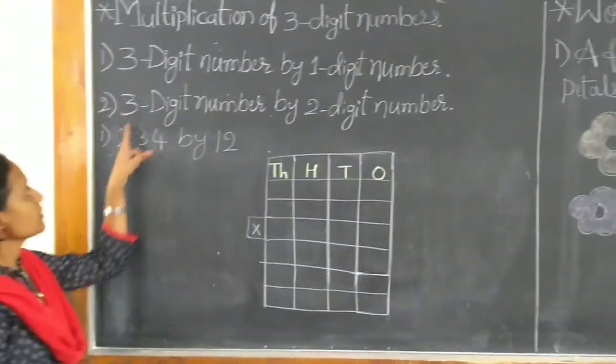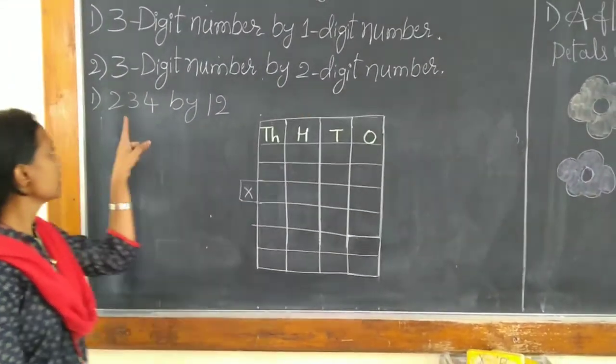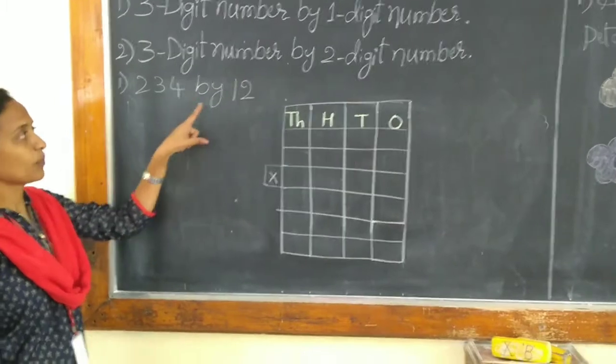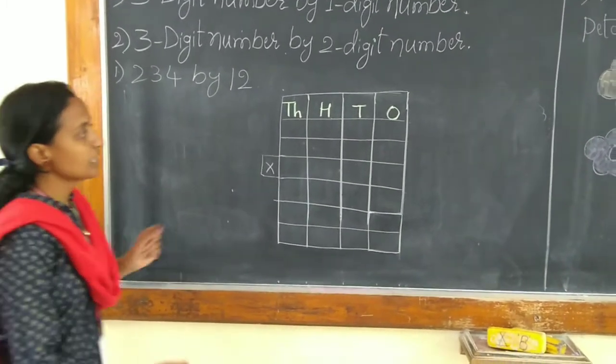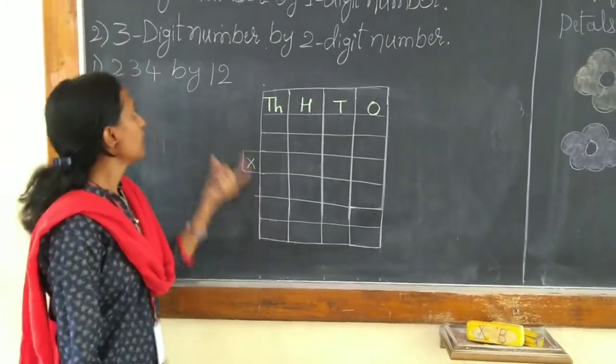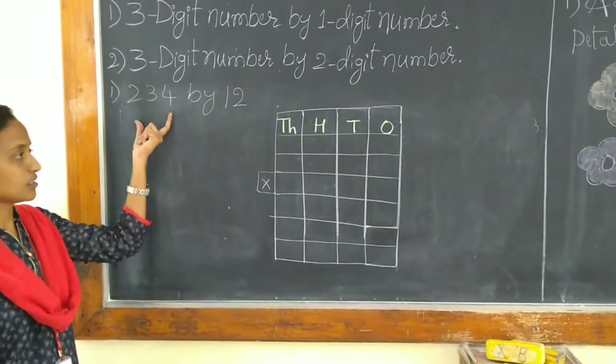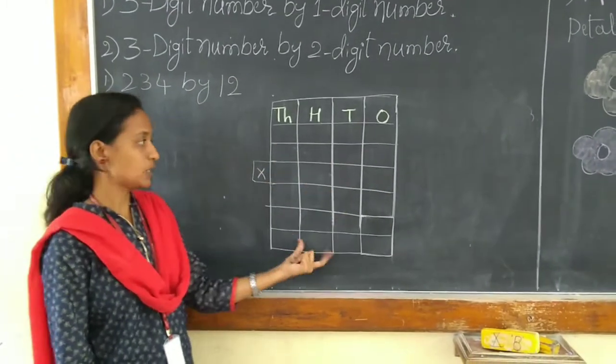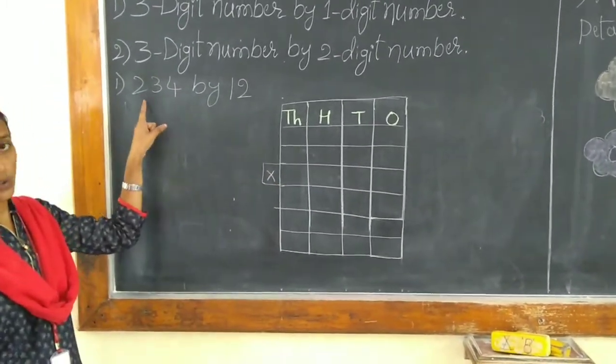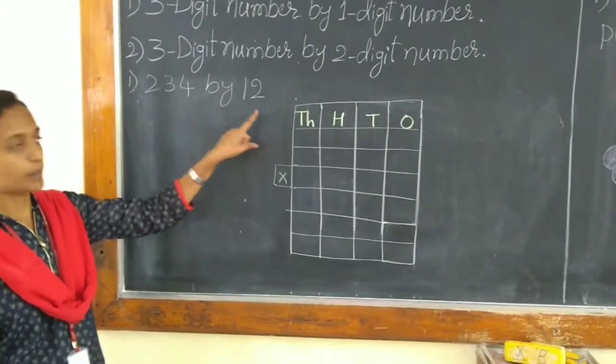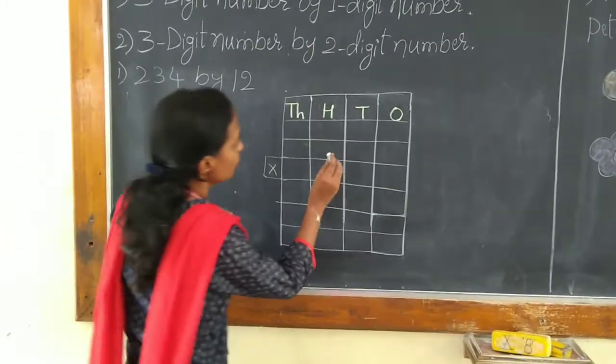Next, we multiply a 3-digit number by 2-digit number. Let us solve this. 234 by 12. First, we need to draw the table. And you have to place the given factors in the respective place values. So, what is the given number? 234 multiplied by 12. So, first place 234.